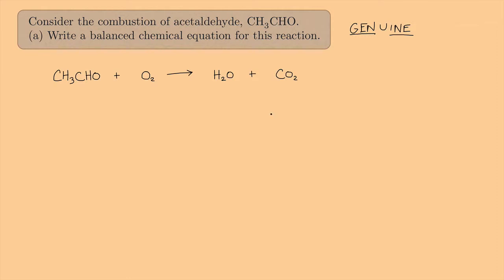Now we have to balance this. A general rule: if you have an element that's all on its own — like this oxygen — you should balance that last. So let's look at the carbons first. There are two carbons on this side and one on this side, so I'm going to need to put a 2 in front of CO₂. There are four hydrogens on this side and two on this side, so I'll need a 2 in front of H₂O.